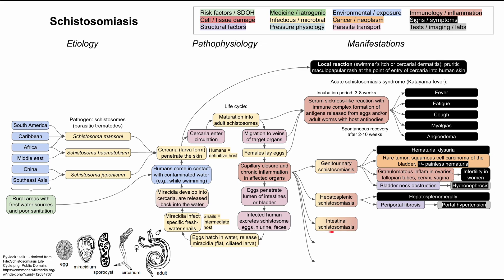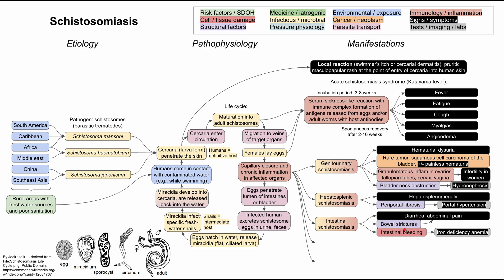Intestinal schistosomiasis can cause intestinal distress such as abdominal pain and diarrhea. It can also cause bowel strictures from the inflammation, which can exacerbate diarrhea and abdominal pain. Intestinal bleeding can occur as well, which over time can cause iron deficiency anemia.